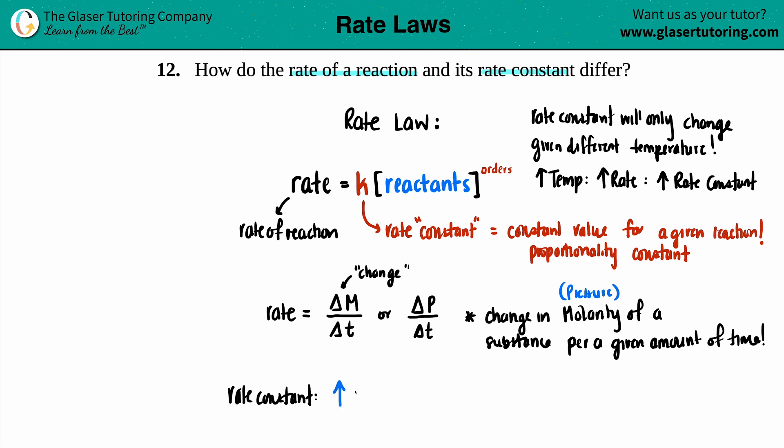If you have a general high rate constant or a high k value, that means that it's a fast reaction, or faster than all the ones that would have a lower rate constant. But if you have low values for a rate constant, generally that means that it's going to be relatively slower.